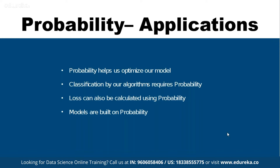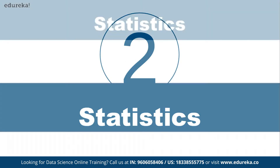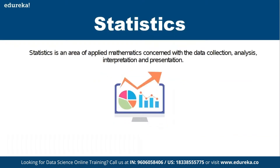Accuracy and loss help you optimize the model. By looking at these metrics, you tune and optimize the algorithm to get closer to the required accuracy percentage.